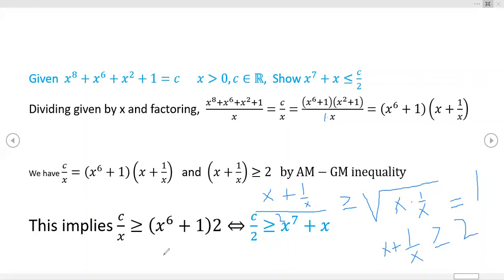And then the rest of it just follows. This implies that c over x, which is what we're interested in, this implies that c over x is greater than or equal to x to the sixth plus one divided by two. And guys, remember x is greater than zero. So if you multiply through by x and divide by two, you get what we were trying to prove. That's the statement we're trying to prove. I just have it written backwards down here, but we've shown that x to the seventh plus x is less than or equal to c over two. So that's that folks.